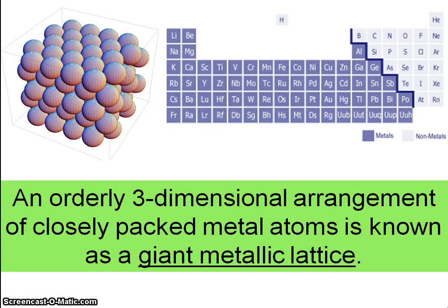There's the periodic table and you can see that three-quarters of the periodic table are metals towards the left hand side. And the atoms of a metal are closely packed.